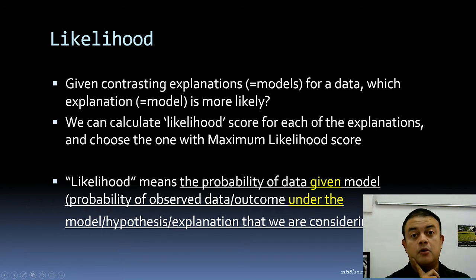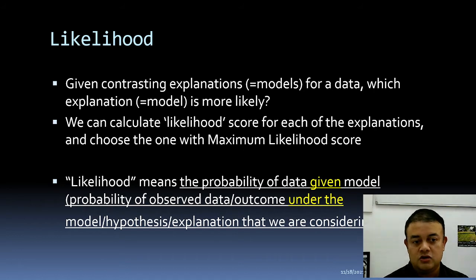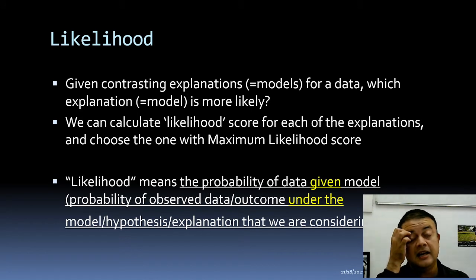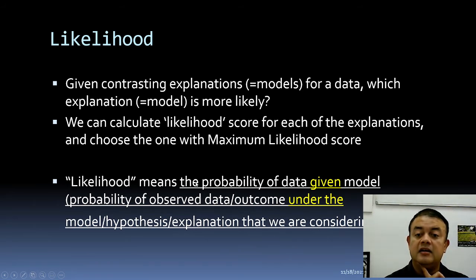Likelihood means the probability of the data given a particular model — written as P(D|M). Likelihood always calculates the probability of obtaining the observed data. In phylogenetics, the data is usually a multiple sequence alignment. The reverse — probability of the model given the data, P(M|D) — is the Bayesian approach. So P(D|M) is the likelihood estimate, while P(M|D) is Bayesian inference.